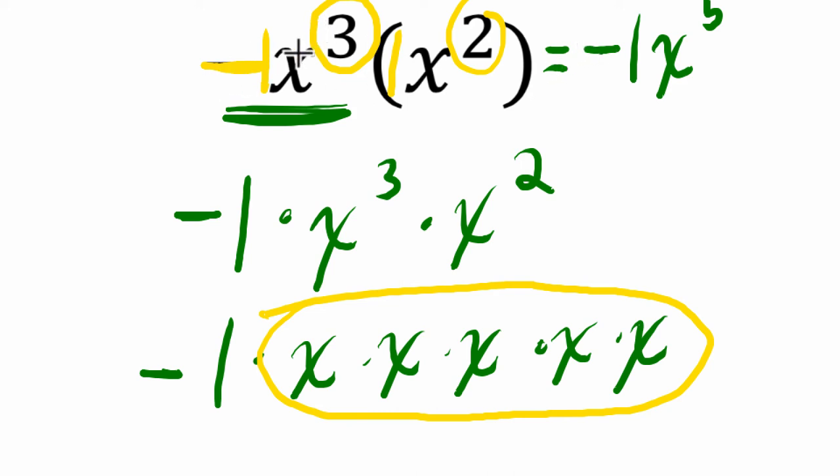So you can look at this, and if you're multiplying with the same base, that's the key, the same base x, you can add the exponents, and then multiply the numbers in front, which are called the coefficients.